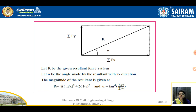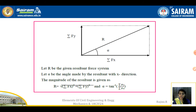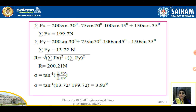Let R be the resultant force system and alpha be the angle made by the resultant with respect to the x direction. The magnitude of the resultant is R = √(ΣFx² + ΣFy²) and alpha = tan⁻¹(ΣFy / ΣFx).